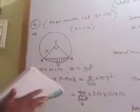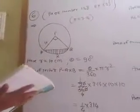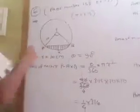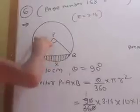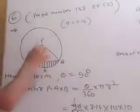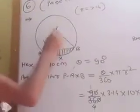find the areas of the minor segment and the major segment. Pi equal to 3.14. So we have to find the area of the minor segment and area of the major segment.